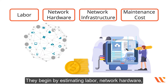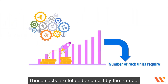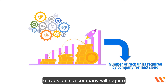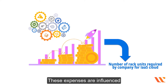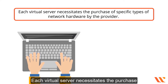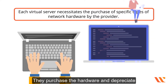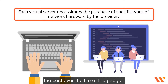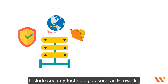Cloud providers calculate the cost of maintaining the network when determining price. They begin by estimating labor, network hardware, and network infrastructure maintenance costs. These costs are totaled and split by the number of rack units a company will require for the IaaS cloud. Costs of network hardware include specific types of hardware each virtual server necessitates, which providers purchase and depreciate over the life of the device.